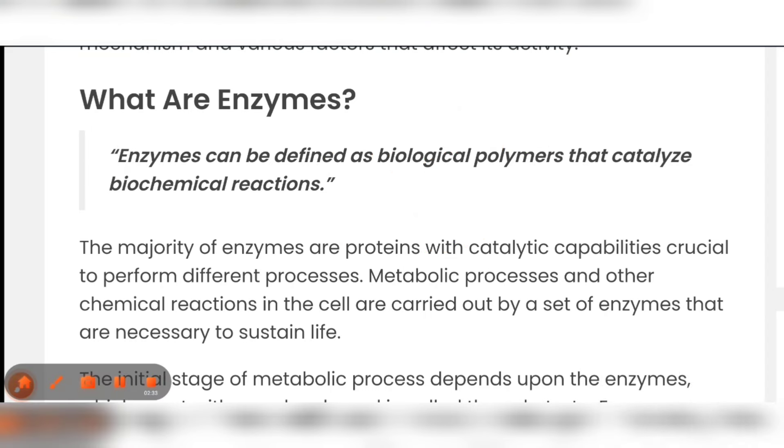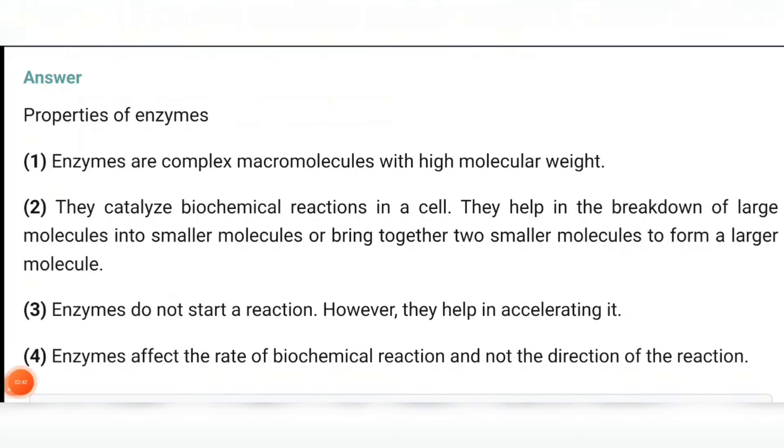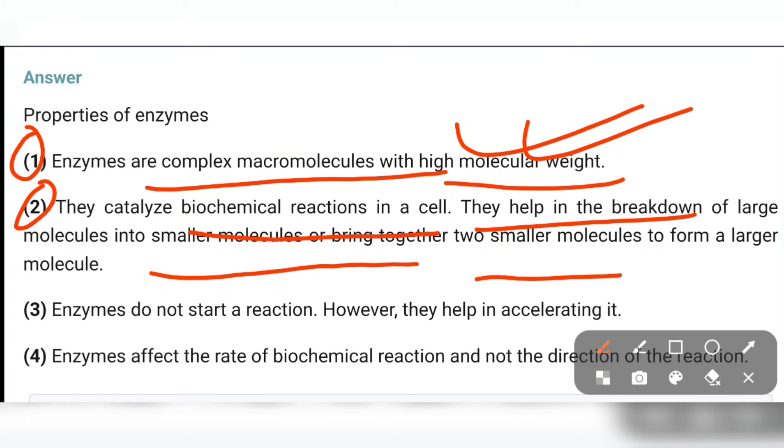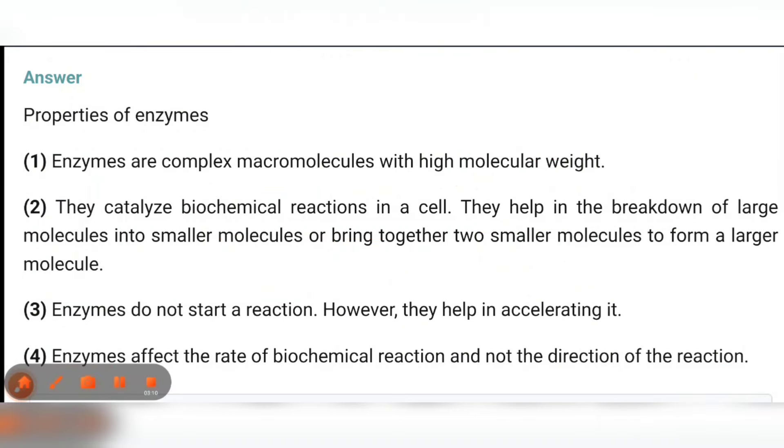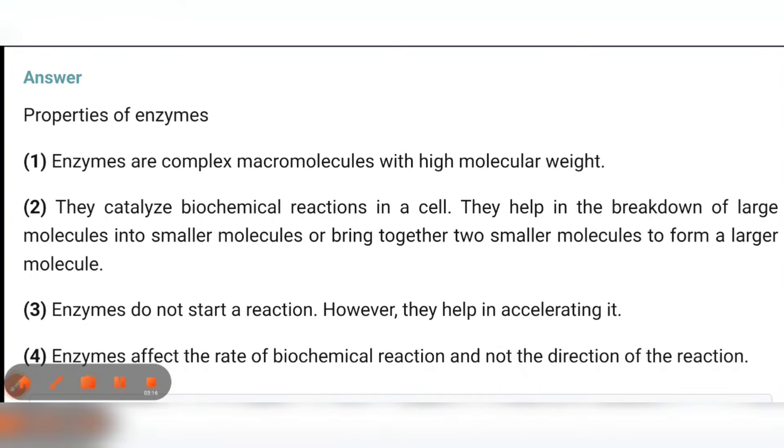So we can write enzymes can be defined as biological polymers that catalyze biochemical reactions. And when we see the properties, you can write: enzymes are complex macromolecules with high molecular weight. They catalyze biochemical reactions in a cell. They help in the breakdown of large molecules into smaller molecules or bring together two smaller molecules to form a large molecule. Enzymes do not start a reaction, however they help in accelerating it. Enzymes affect the rate of biochemical reaction, not the direction of the reaction. So this was your last question.